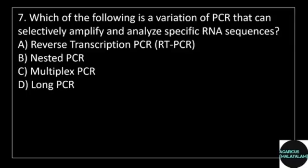7th question. Which of the following is a variation of PCR that can selectively amplify and analyze specific RNA sequences? Answer options. Option A: Reverse transcription PCR. Option B: Nested PCR. Option C: Multiplex PCR. Option D: Long PCR.